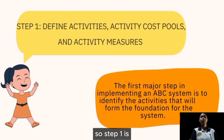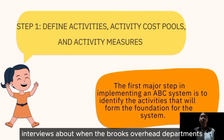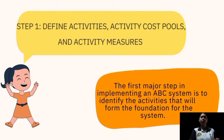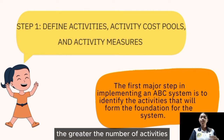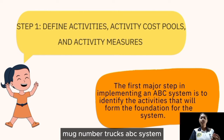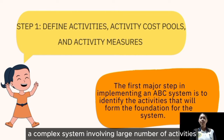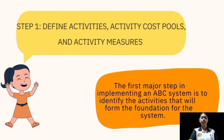The common procedure in Step 1 is for individuals on the ABC implementation team to interview people who work in overhead departments and ask them to describe their major activities. This procedure results in a very long list of activities. The greater the number of activities tracked by the ABC system, the more accurate the costs are likely to be. However, a complex system involving a large number of activities is costly to design, implement, maintain, and use.